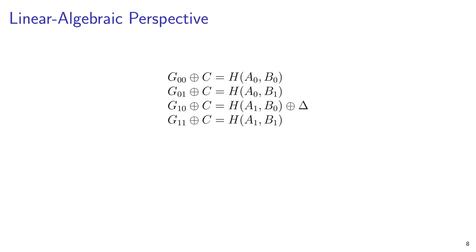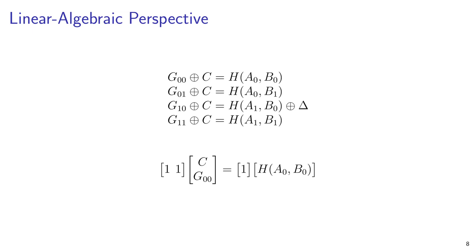Rearrange the equation so that the variables that the garbler solves for are on the left, and the values that are already constrained are on the right. When the garbler reaches this gate, it will already know the input wire labels A0 or A1 and B0 or B1, and it will already have chosen delta. It solves for the gate ciphertext GIJ and the output wire label representing false, C. These linear equations, specifying the garbled gate, can be written with linear algebra. For this technique, the hash gets multiplied by an identity matrix, but this matrix will get more interesting when we try to optimize garbling.